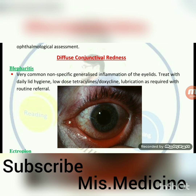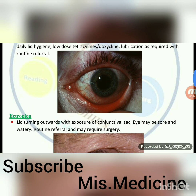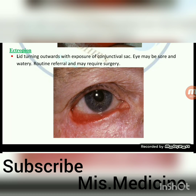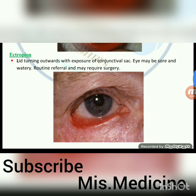Diffuse conjunctival redness: Blepharitis — very common, non-specific generalized inflammation of the eyelids. Treat with daily lid hygiene, low-dose tetracyclines or doxycycline, lubrication as required, with routine referral. Ectropion — lid turning outwards with exposure of conjunctival sac; eye may be sore and watery. Requires routine referral and may require surgery.